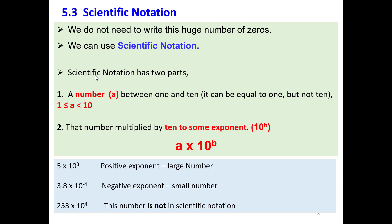We don't need to write this huge number of zeros if we use scientific notation. Any number written in scientific notation has two parts. One is the number, represented by 'a'. This number should be between 1 and 10. The second part is any power of 10.